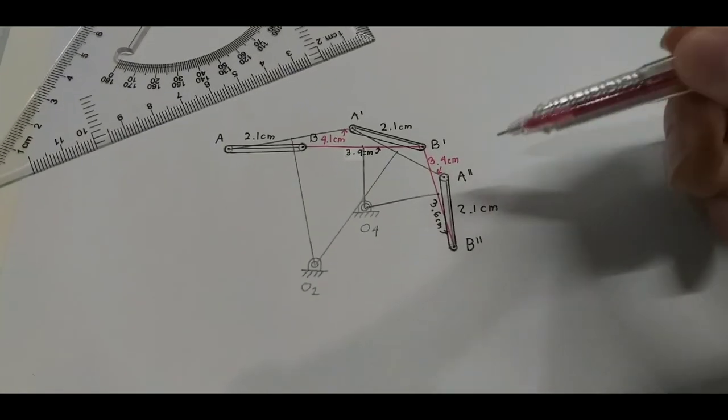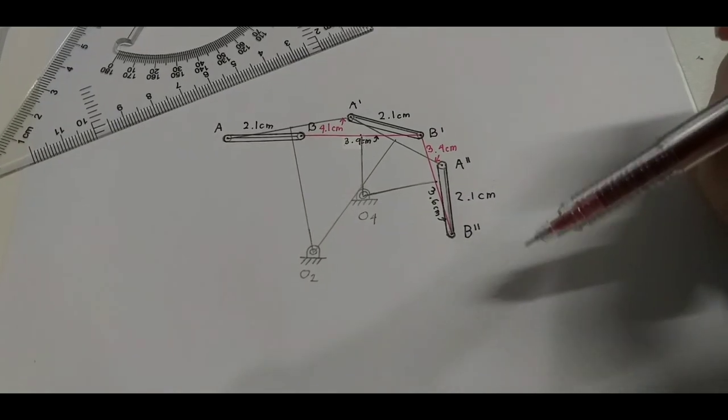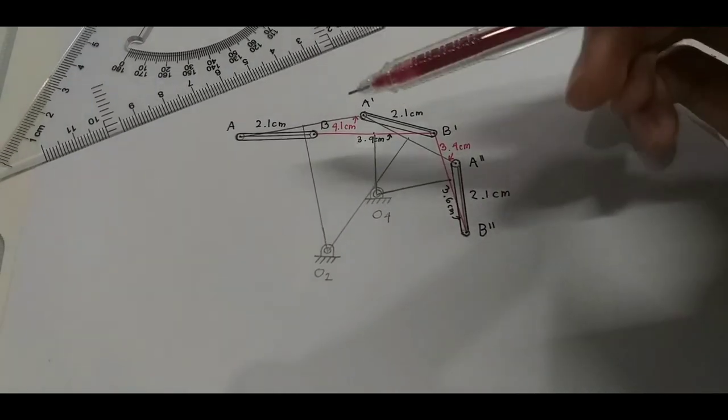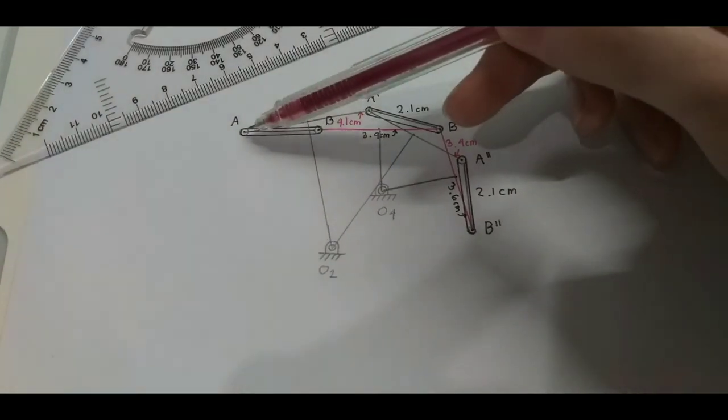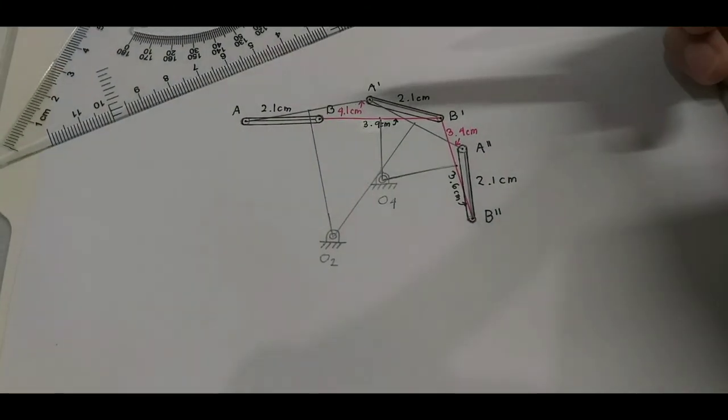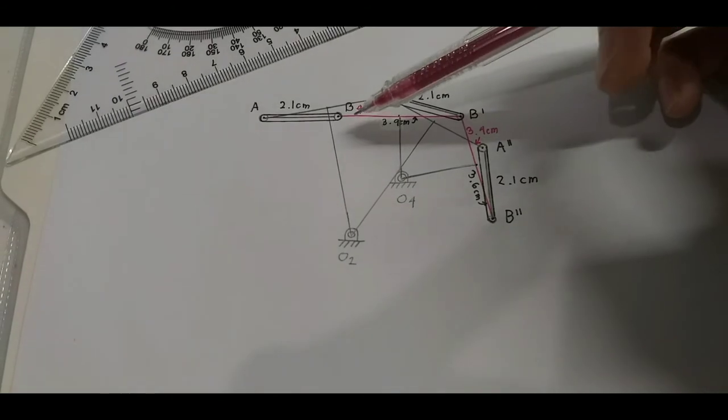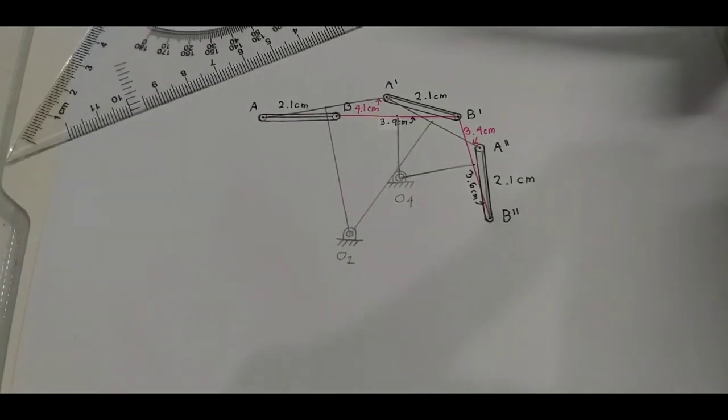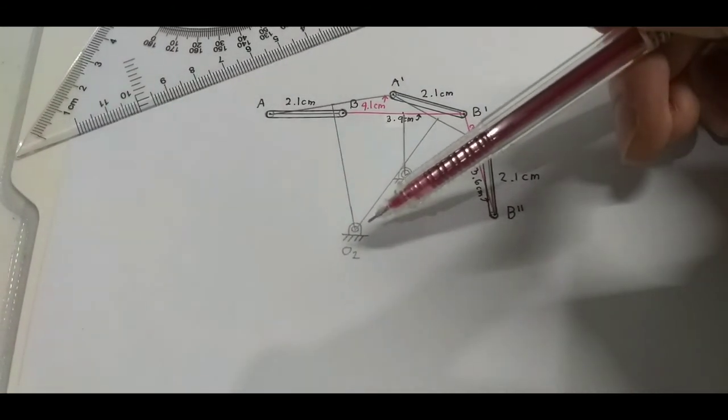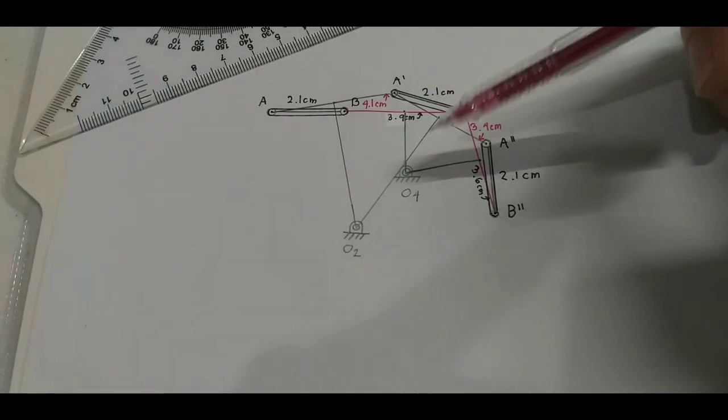So now we're gonna start drawing our links for our four bar mechanism and for link 1 we have A to O2 and then our link 2 would be A to B, our link 3 would be B to O4 and finally our last link would be O2 to O4. Let's start drawing those links.